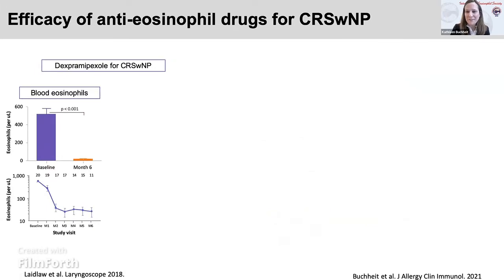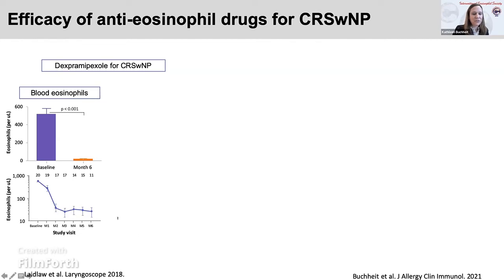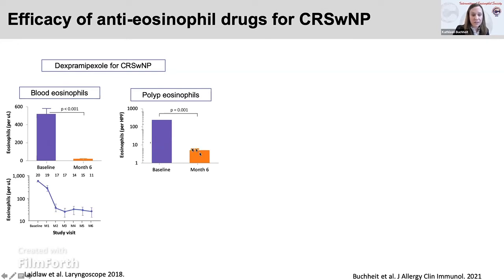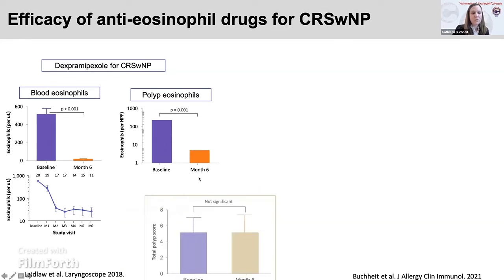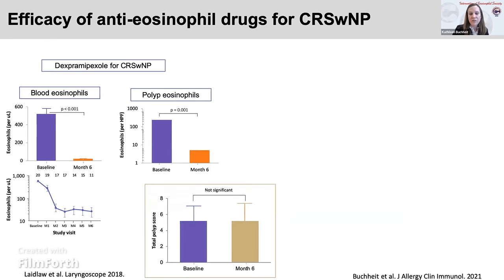We've now seen for the third time today this provocative data on the efficacy of anti-eosinophil drugs for CRS with nasal polyps. The dexpramapexol study by Tanya Laidlaw in a small open-label study of just 13 patients showed a marked drop in blood eosinophils as well as tissue eosinophils. Pre- and post-treatment biopsies showed markedly fewer eosinophils, but really no significant improvement in nasal polyp size, and patients didn't actually feel that much better. We were a site for this study. Around the same time, colleagues Dan Dwyer and Jose Ordovas-Montanes were using SEQUEL — an early single cell RNA sequencing platform — to sequence nasal polyp cells.